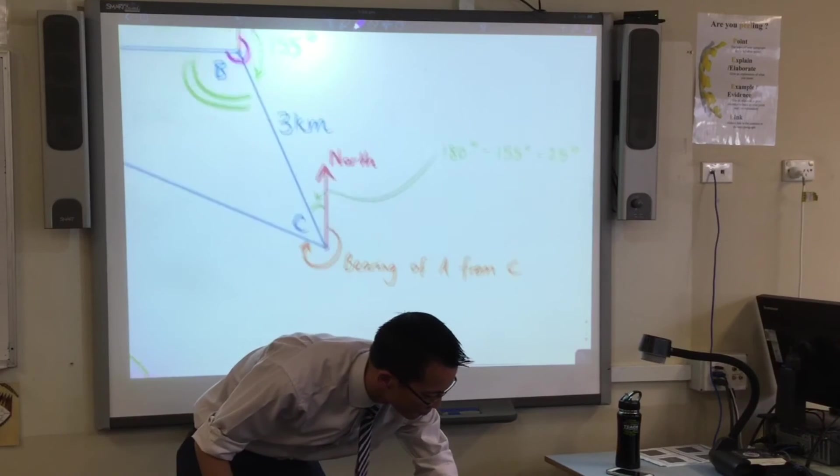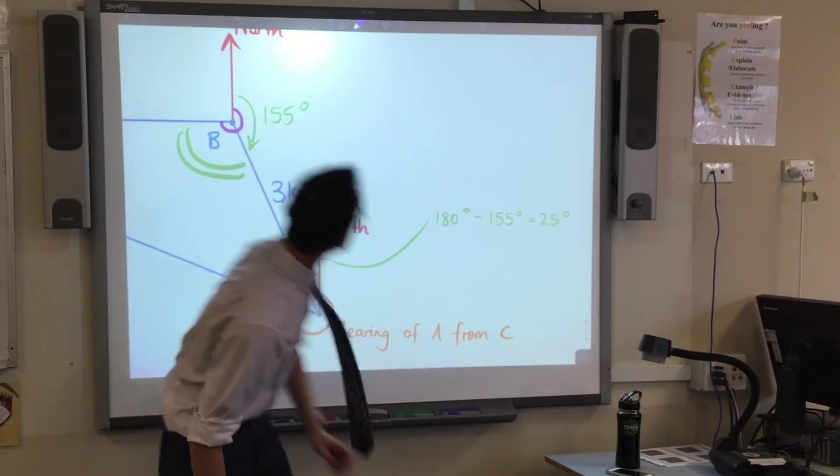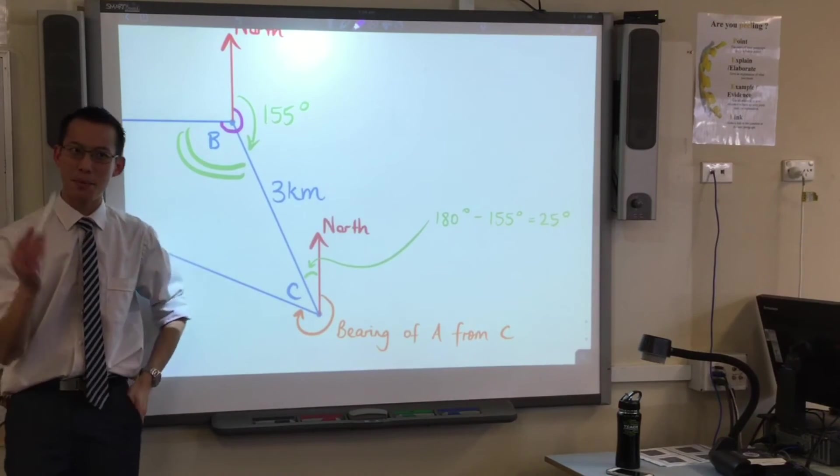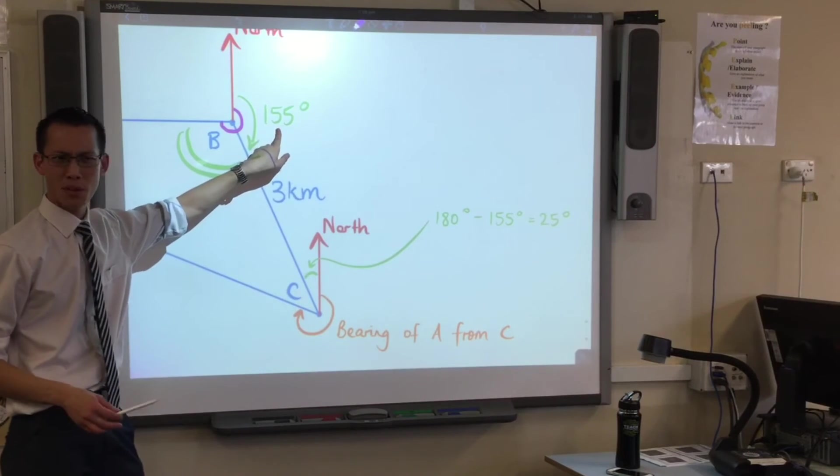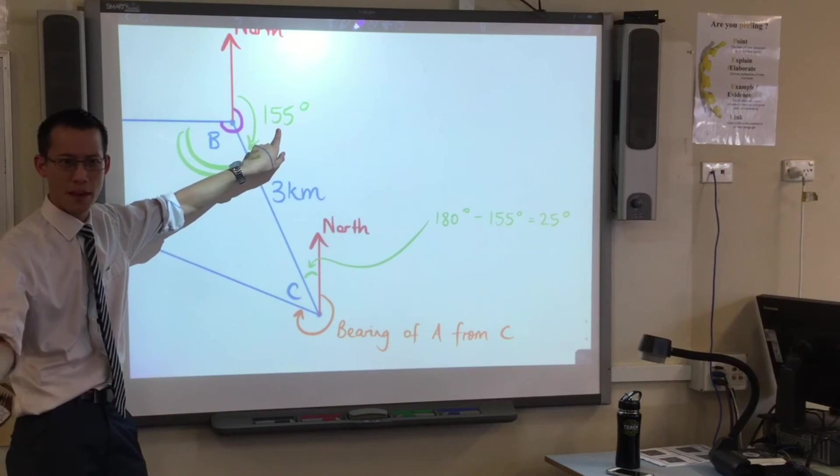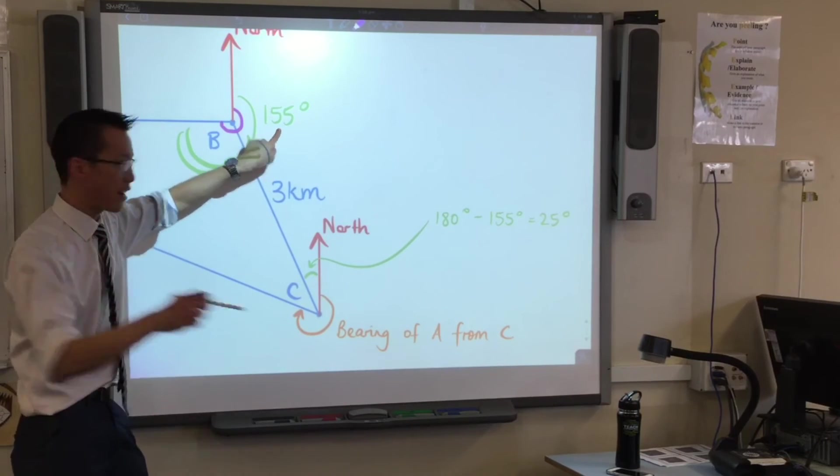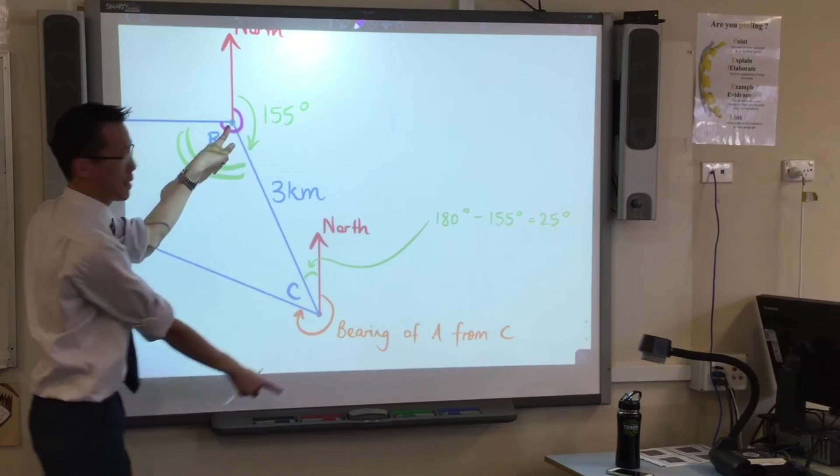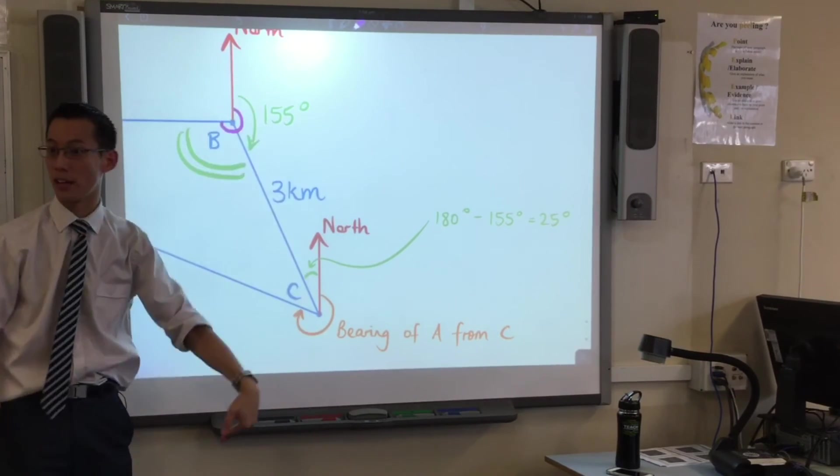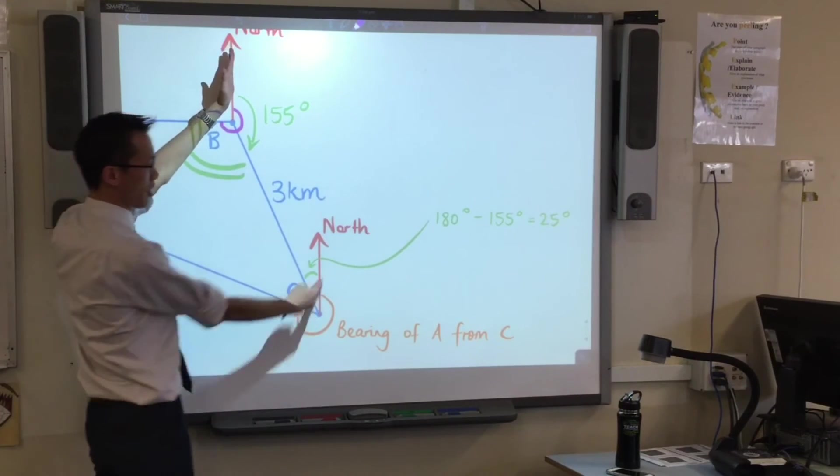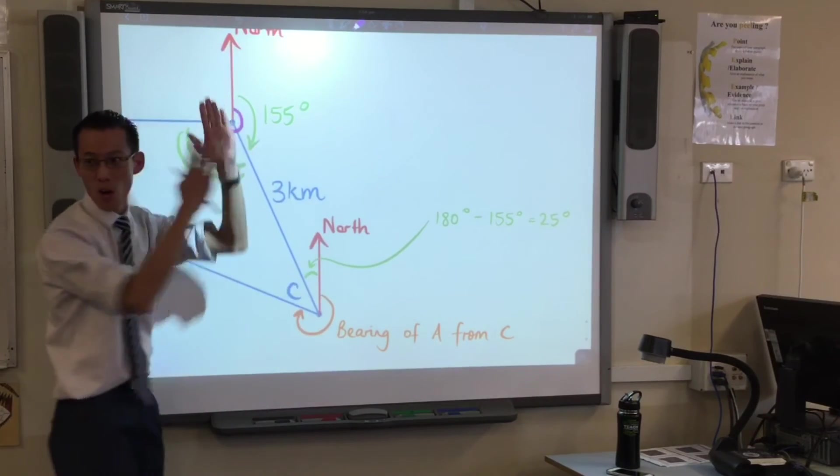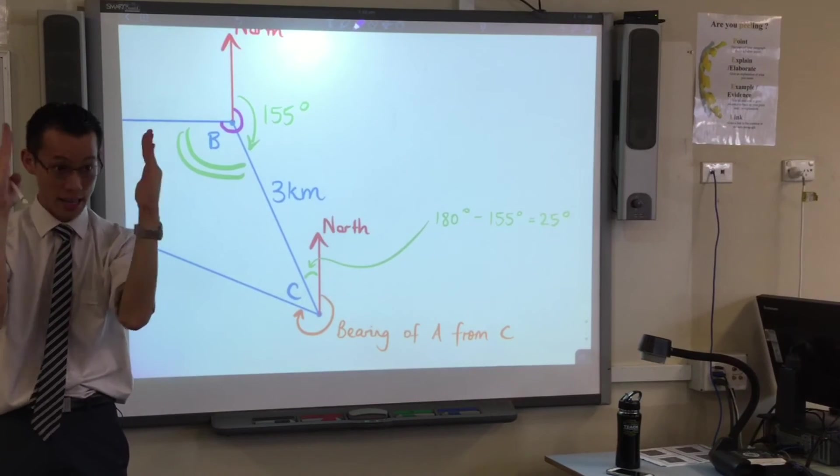Just look back. Do you remember? At the beginning when we drew this diagram, I put this in. Do you remember what that was? What piece of information in the question was that? That was the bearing of C from B. Right. I spun around and I started walking. So I put a north and a north here. North lines are always going to be parallel.